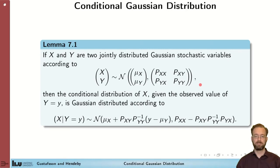then the conditional distribution of X given the observed value of Y is also Gaussian distributed according to this distribution here.